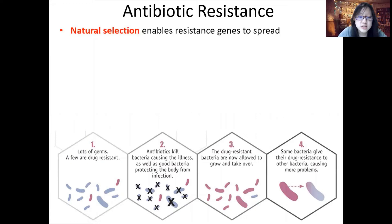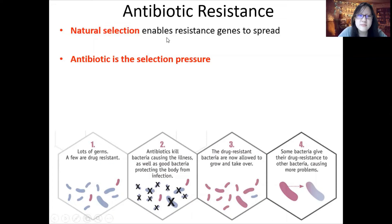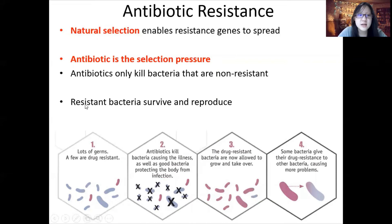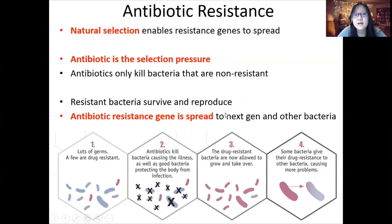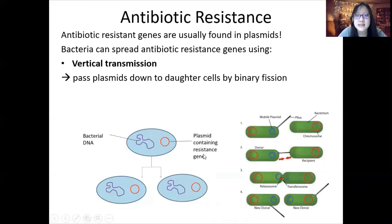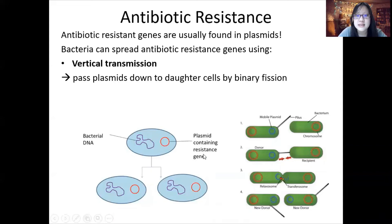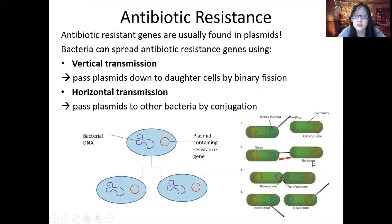After mutations, natural selection enables resistant genes to spread. Antibiotics act as the selection pressure — they only kill non-resistant bacteria, so only resistant bacteria survive and reproduce. All surviving bacteria are antibiotic-resistant. Antibiotic-resistant genes are usually found in plasmids, small circular DNA found in bacteria. These genes can spread via vertical transmission through binary fission to daughter cells, or by horizontal transmission to other bacteria — even different species — by conjugation.